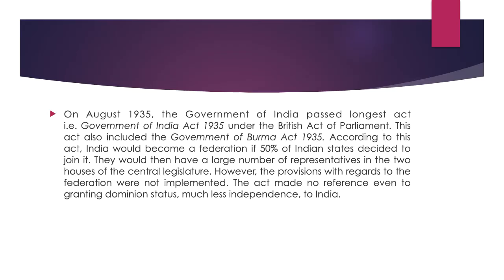In August 1935, the Government of India Act 1935 was passed as the longest act under the British Act of Parliament. This act also included the Government of Burma Act 1935. According to this act, India would become a federation if 50% of Indian states decided to join it. They would then have a large number of representatives in the two houses of the central legislature. However, the provisions with regards to federation were not implemented. The act made no reference even to granting dominion status, much less independence to India.